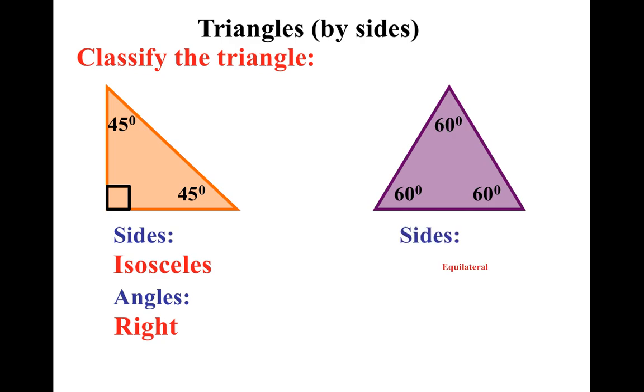So by sides, equilateral. By angles, it is called acute. Now there's another name for this one that you'll see in your book. If all the angles are exactly the same, we call that equiangular, which also is kind of fun to say.